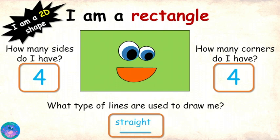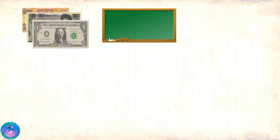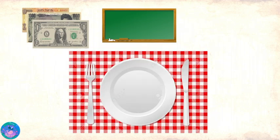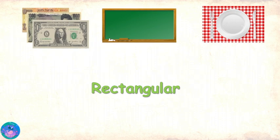Can you identify some objects around you that have my shape? Currency notes, chalk boxes, placement mats — all these things have a rectangle shape or are rectangular. Very good! Time for me to go, and you can meet the next shape now.